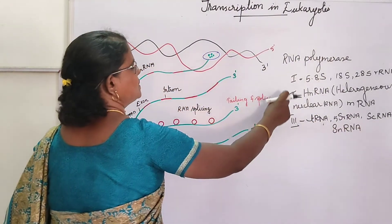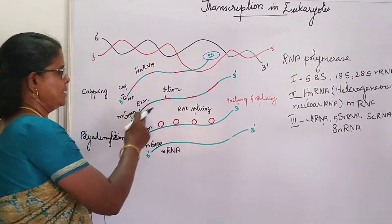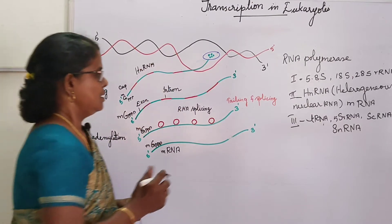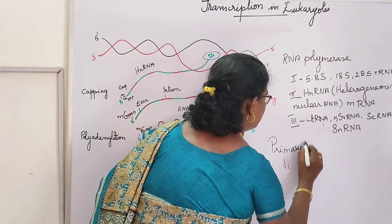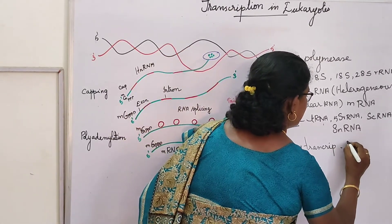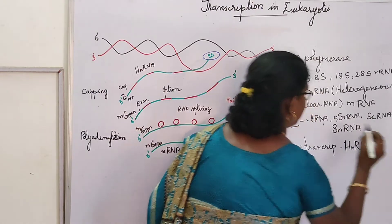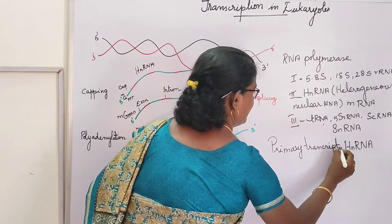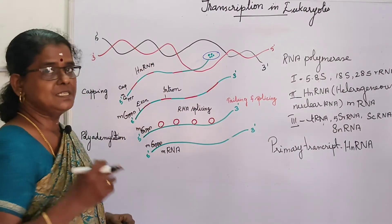RNA polymerase 2 is responsible for HnRNA. The nascent RNA synthesized by RNA polymerase 2 is called heterogeneous nuclear RNA, or primary transcript. This primary transcript — that is HnRNA, heterogeneous nuclear RNA — is converted into functional mRNA after post-transcriptional processing.